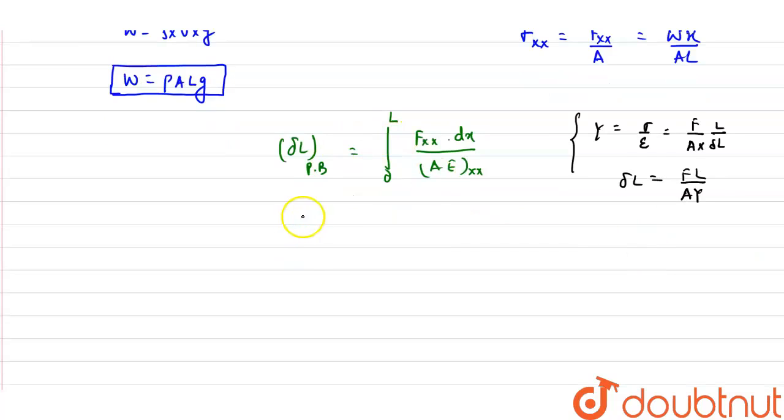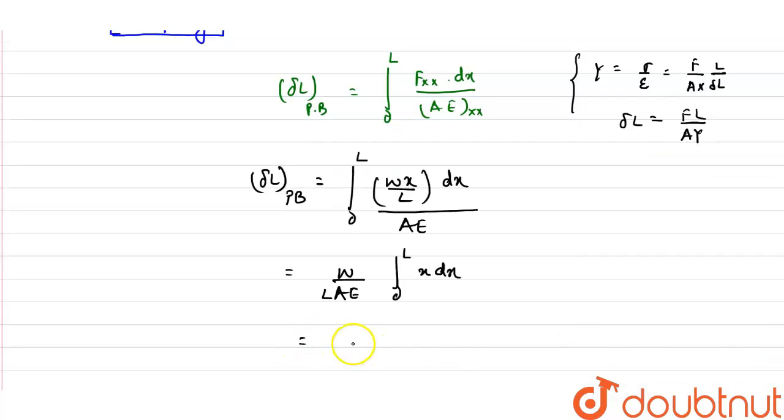Using this, the elongation of the prismatic bar will be equals to integral 0 to L, Fx—that is the load at the cross section xx—is Wx upon L, into length dx of the element, divided by A at the cross section, which is constant. From here we got W upon LAE into integral 0 to L x dx. On integrating we get W upon LAE into L² upon 2. L² cancels L, so it will be equals to WL upon 2AE.